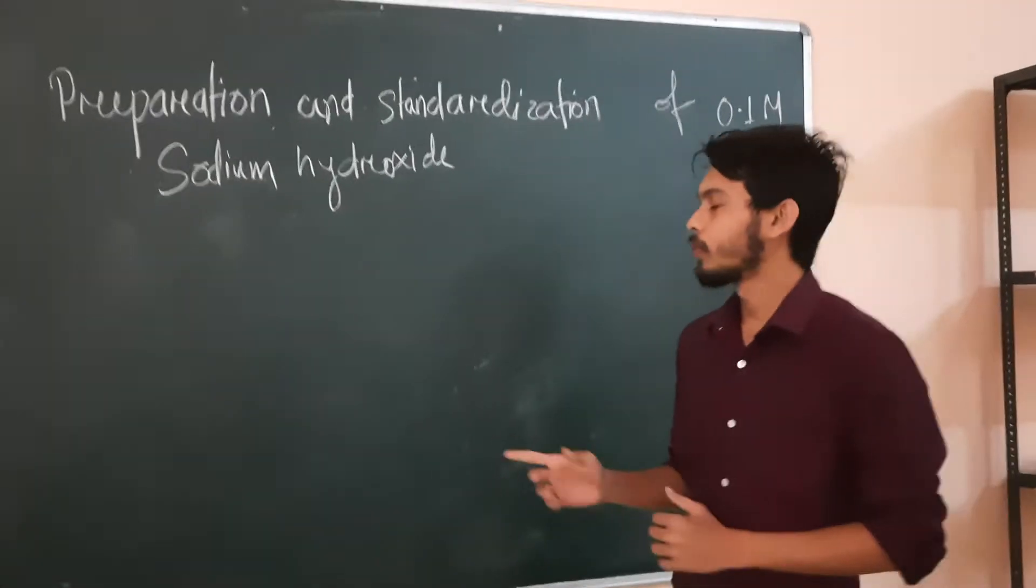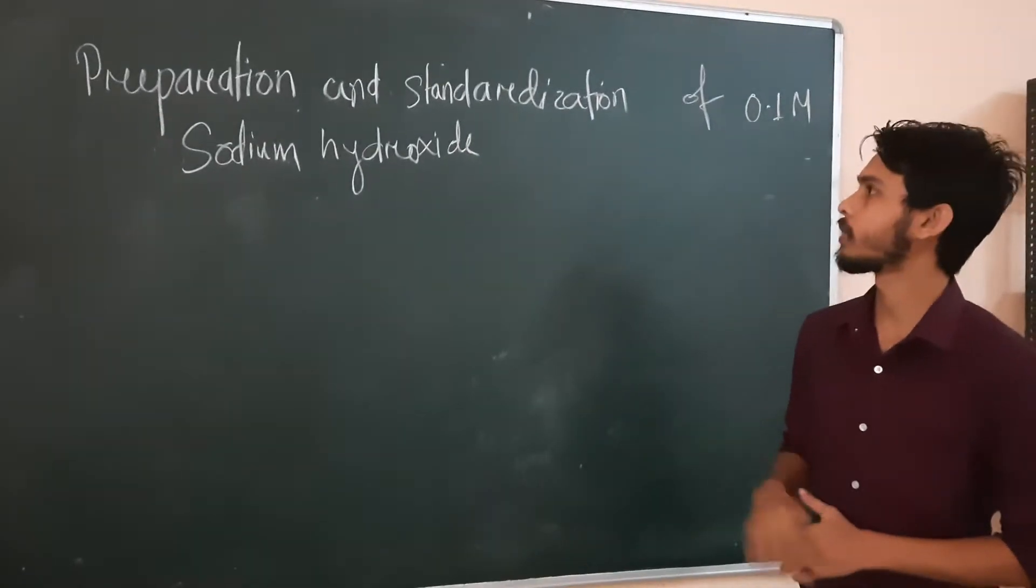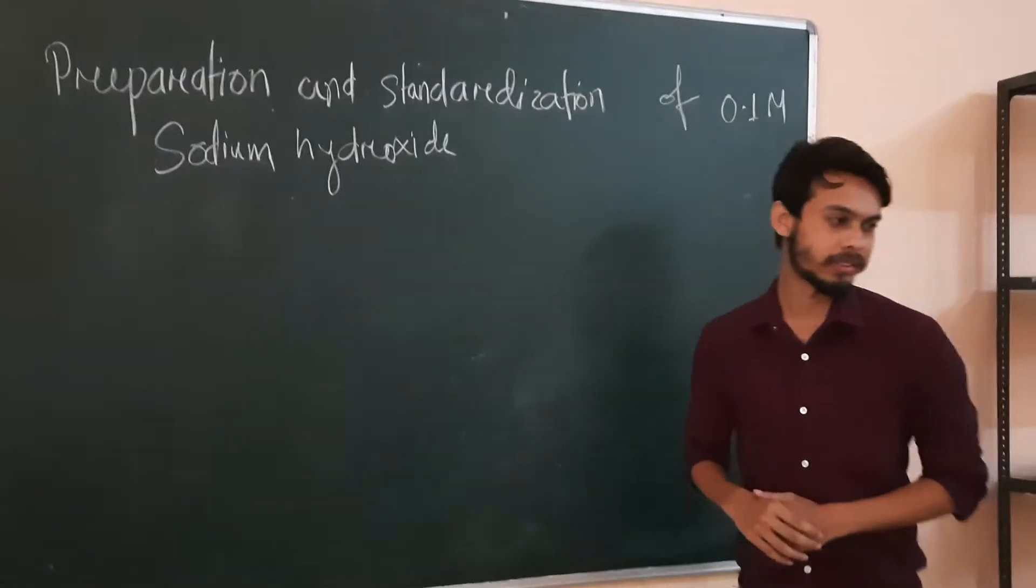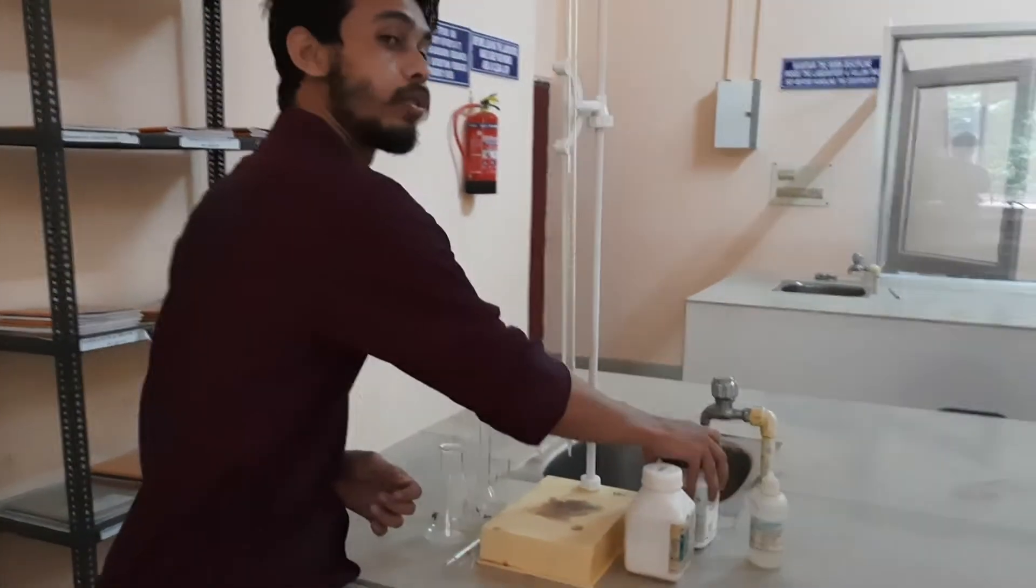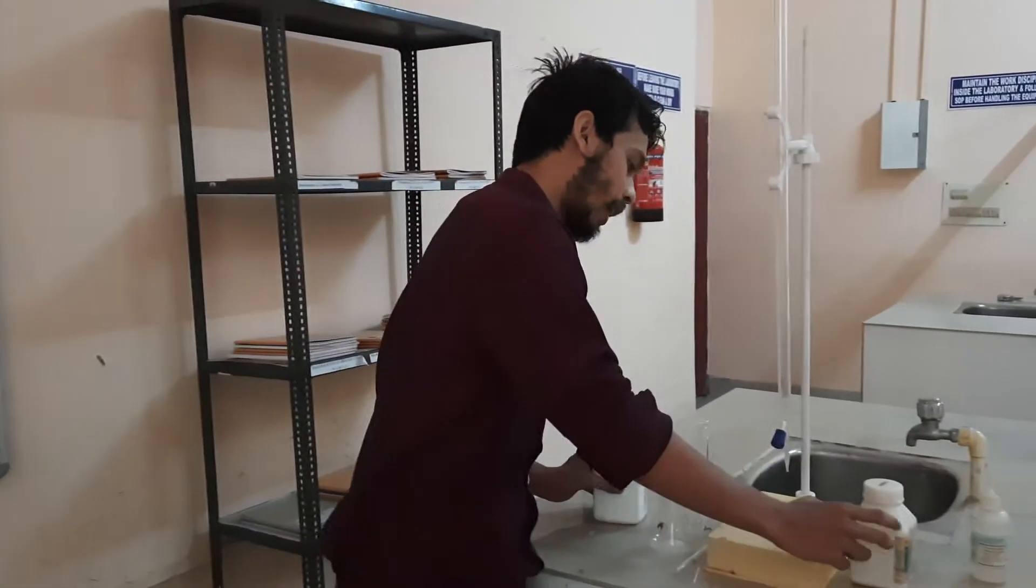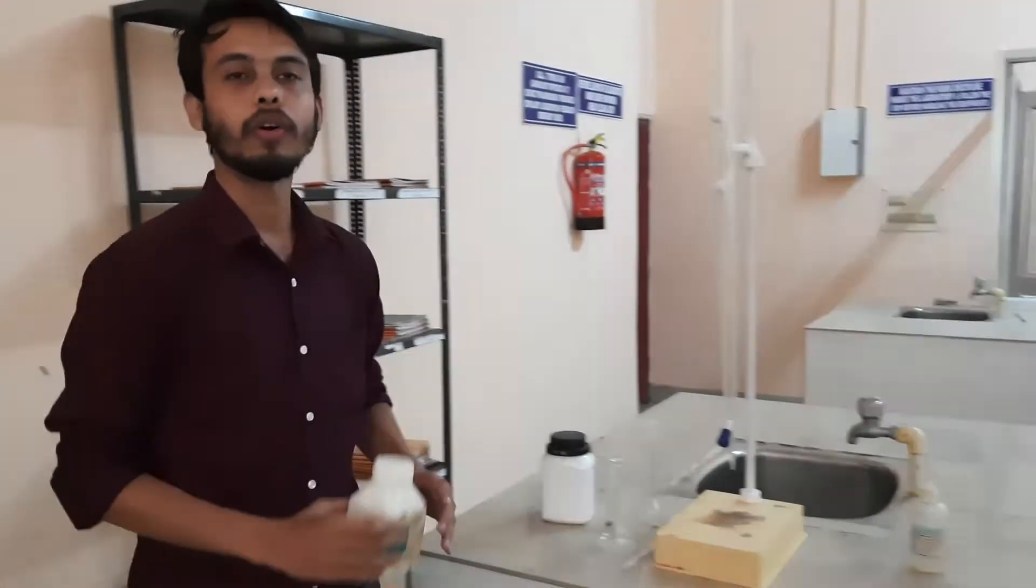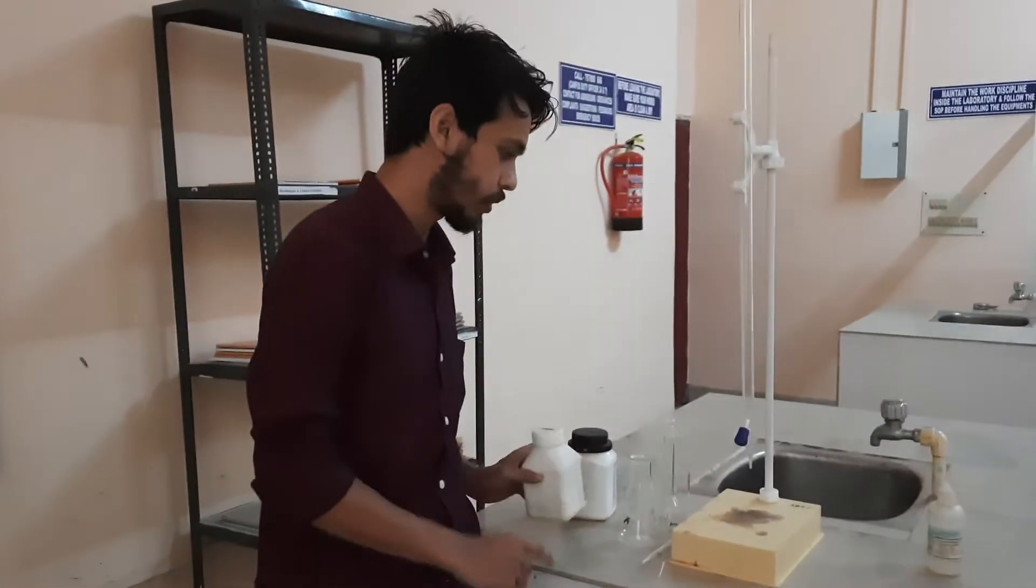For that we need some chemicals to perform or to carry out this experiment. The chemicals are, we are going to prepare sodium hydroxide, so we need sodium hydroxide for this. And we are going to standardize the solution by using oxalic acid. This is the oxalic acid solution. So oxalic acid, we are going to prepare the solution.